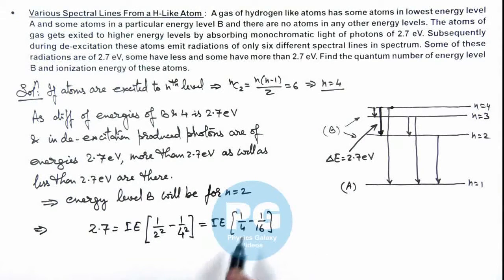Here in this situation ionization energy we cannot directly write as 13.6 Z square because 13.6 is a constant we consider for a simple atom in which 13.6 is the binding energy of hydrogen atom. Now if we calculate the value of ionization energy, this gives us 2.7 multiplied by 16 divided by 3, which is 14.4 electron volts. That is the result of this problem.